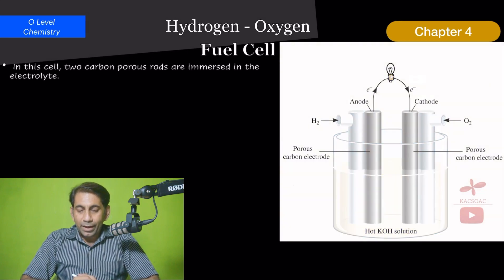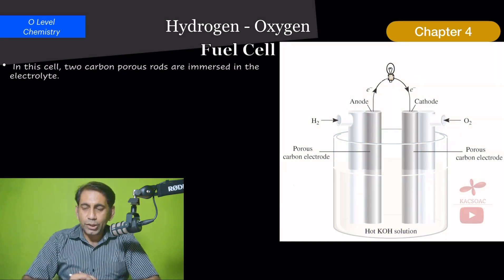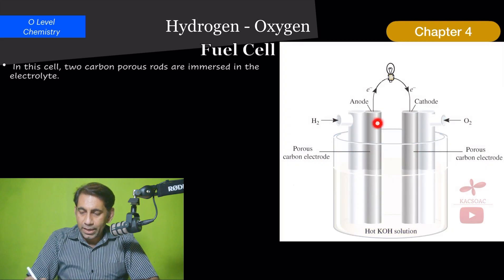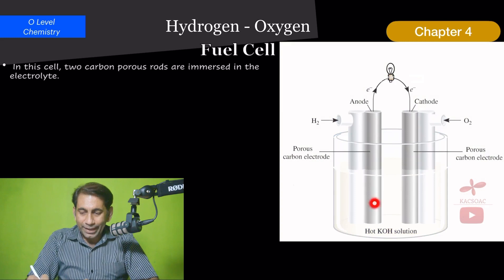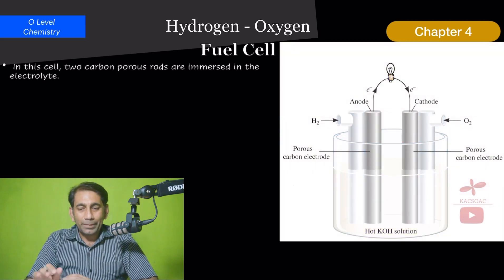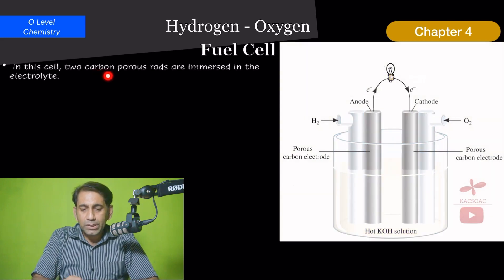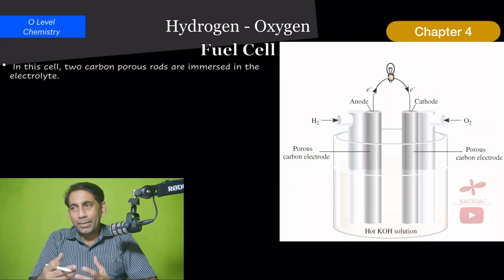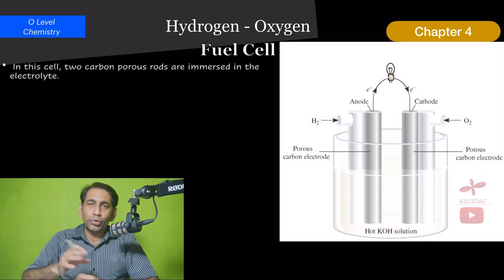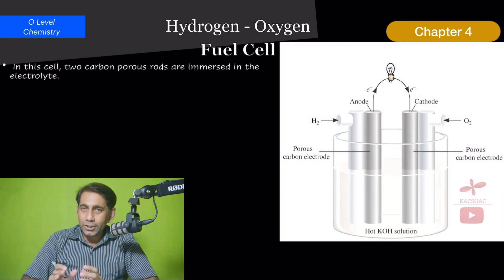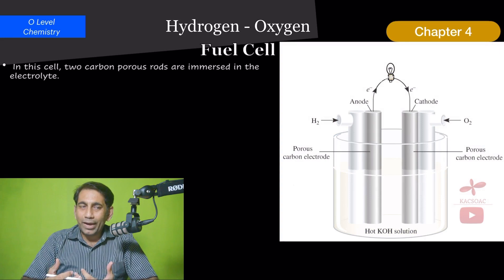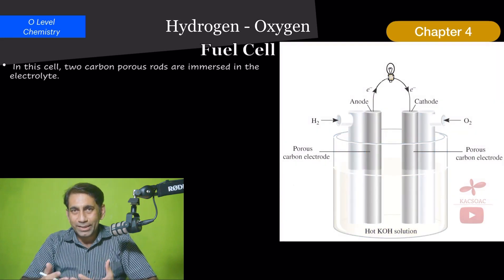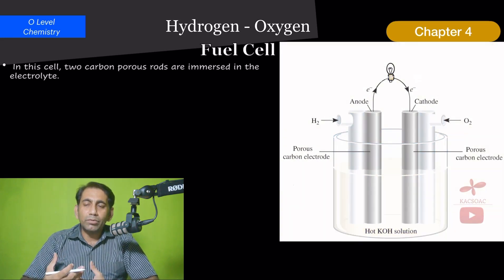In the hydrogen-oxygen fuel cell, two porous carbon rods are immersed into an electrolyte. Porous carbon rods allow the electrolyte to seep through them. They act as facilitators — a platform that helps to lose and gain electrons.